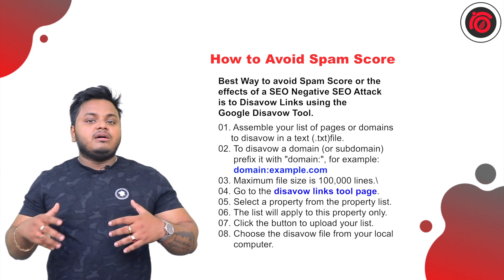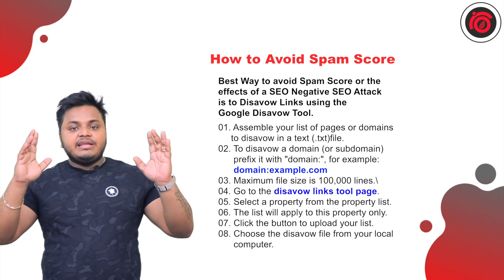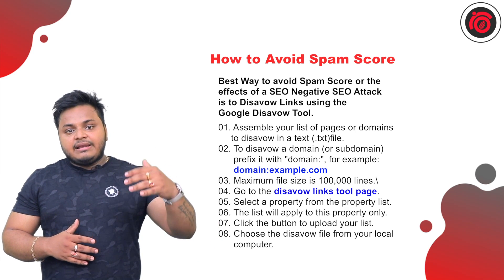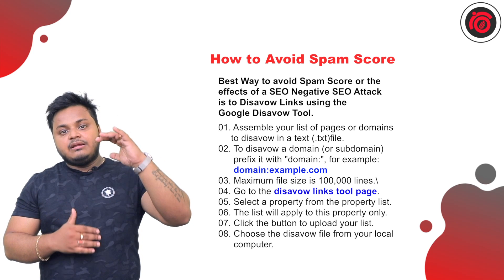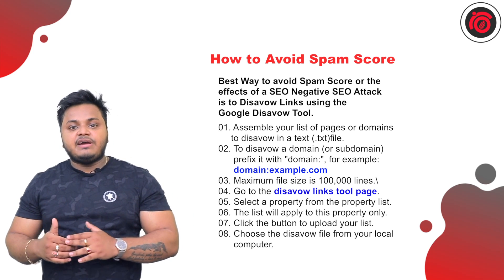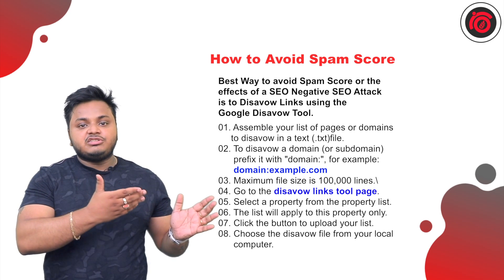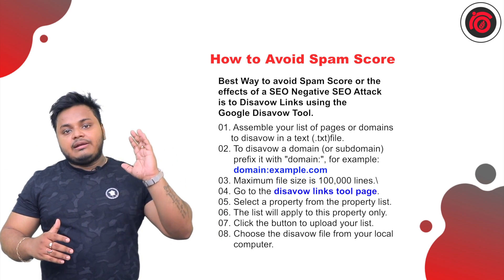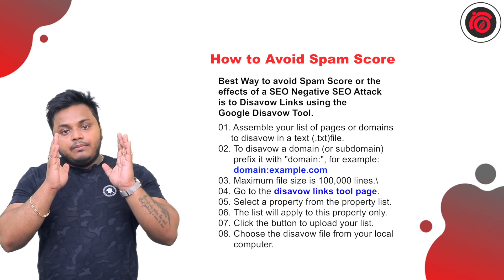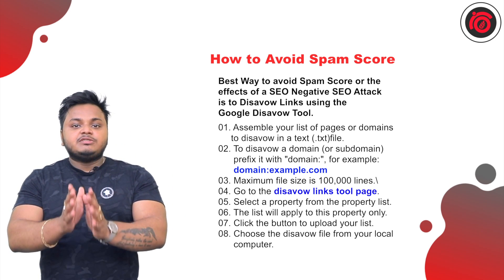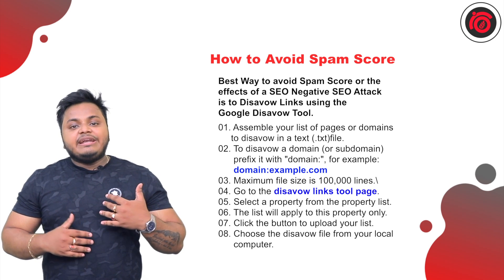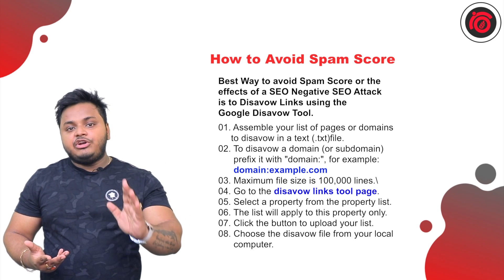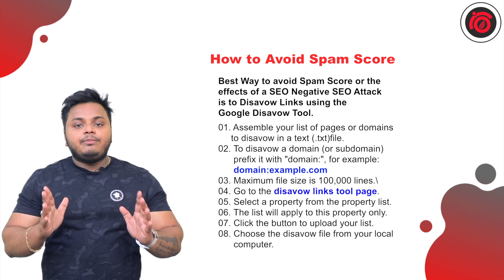Point number two: the backlink site should be relevant to your niche. Point number three: the backlink site should not be spammy itself — for example, it should not be from a guest commenting platform with a large number of unrelated comments. Once you identify all the spam backlinks, you can make a list in a disavow.txt file, upload the file on the disavow section of Google Search Console as shown on the screen, click disavow, and your entire collection of spam backlinks will be disavowed by Google.